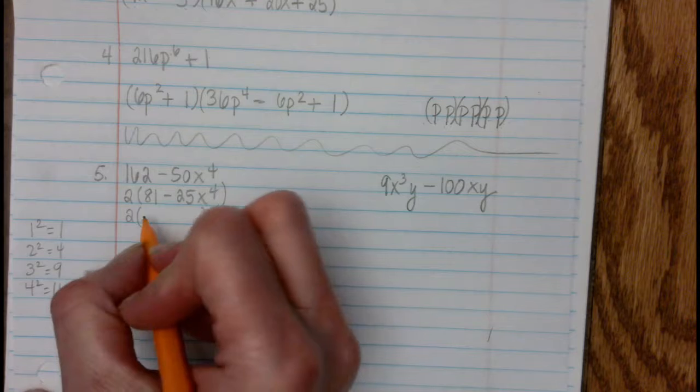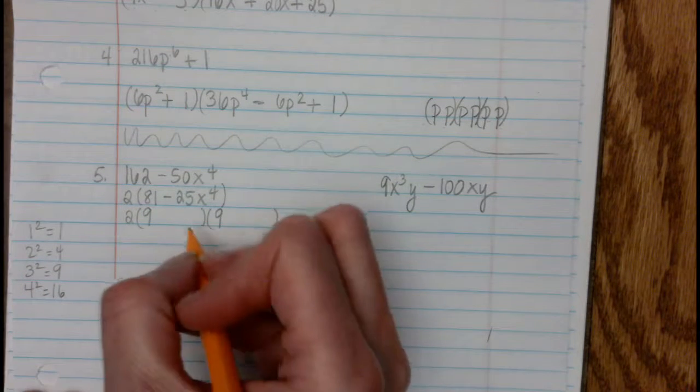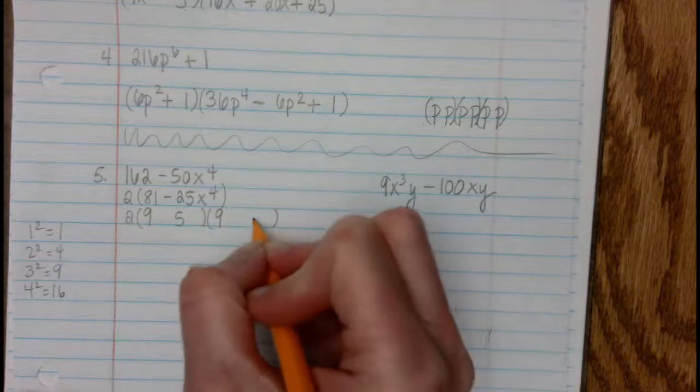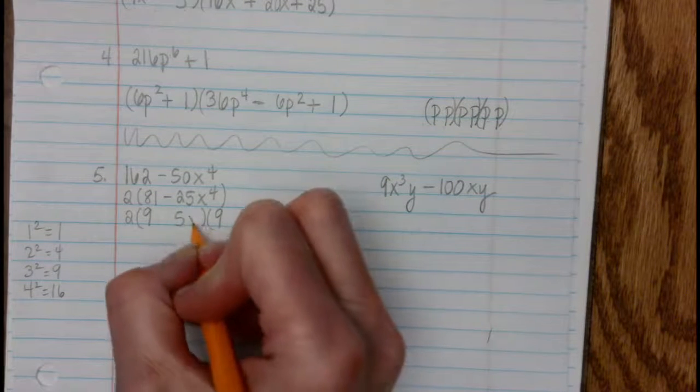And the square root of 81 is 9, so this is going to be 9 times 9. Square root of 25 is 5, and the square root of x to the 4th is x squared.